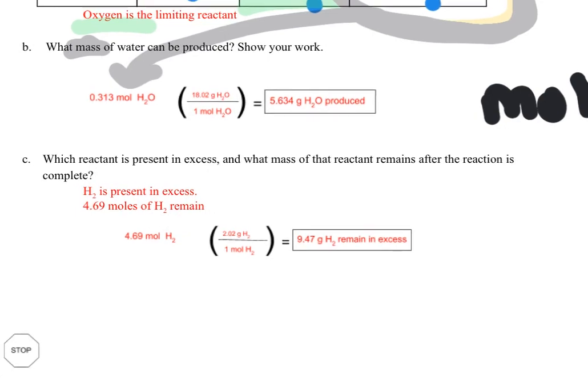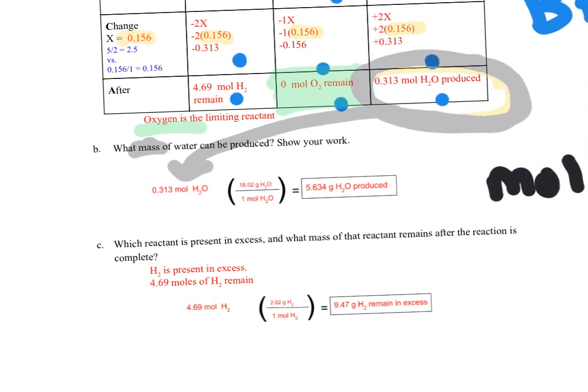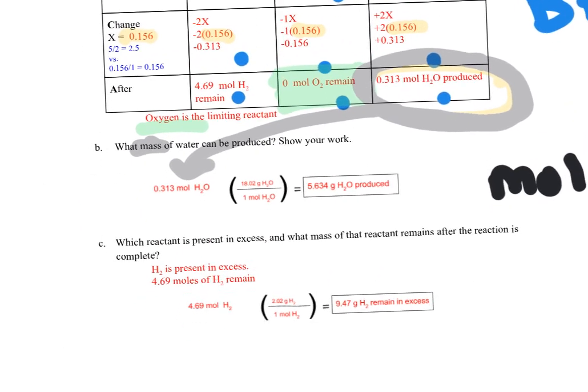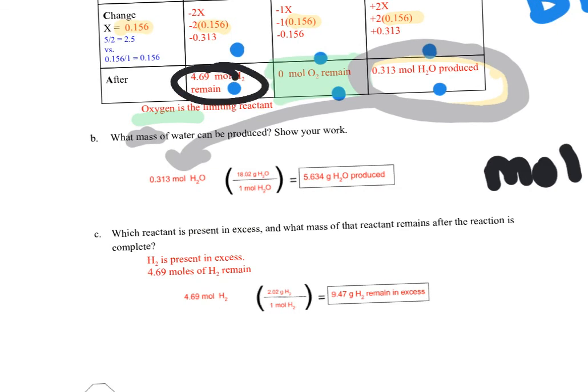And then which reactant is excess? So now I'm talking about my excess reactant, this guy, 4.69 moles of H2, and how much remains. So I need to go from moles to mass of H2. So 4.69 moles of H2 times the molar mass of H2, which is 2.02.